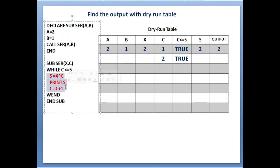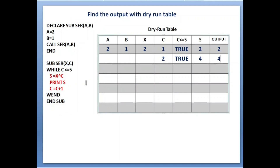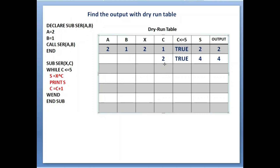When condition is true, the three lines of code inside the while loop execute again. s equals to x exponential c: value of x is 2, value of c is 2, so 2 to the power of 2 equals 4. Value of s is 4. Print s — value of s is 4, so output is 4. Then c equals to c plus 1: c was 2, so 2 plus 1 is 3. Value of c is now 3.